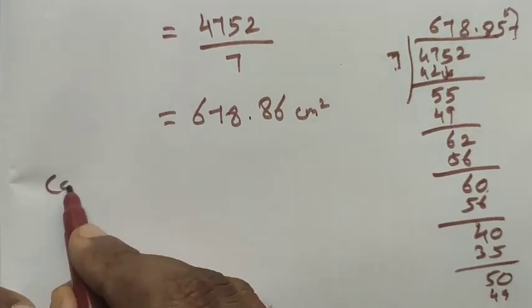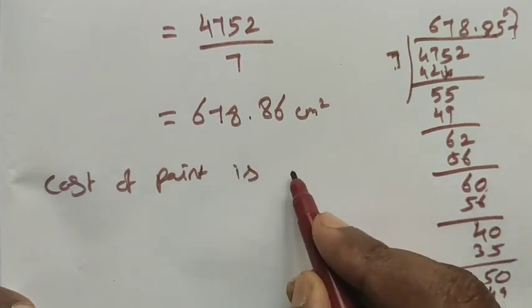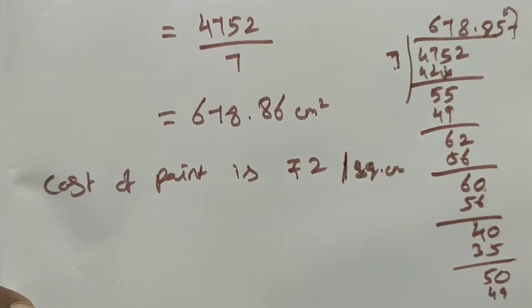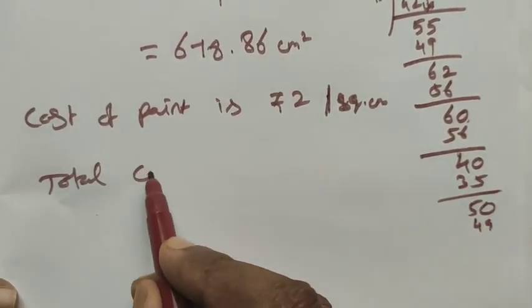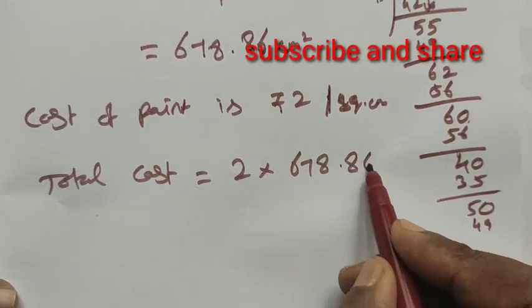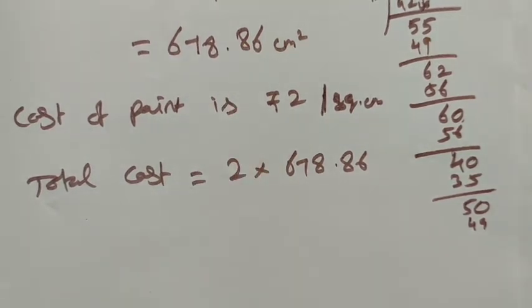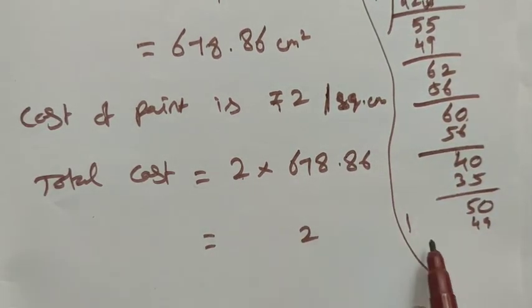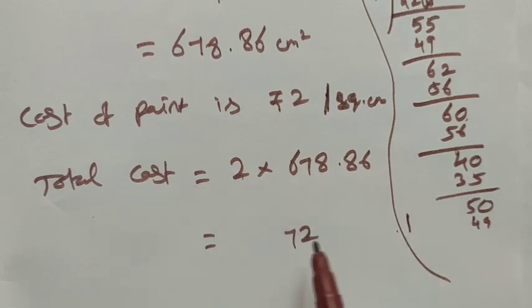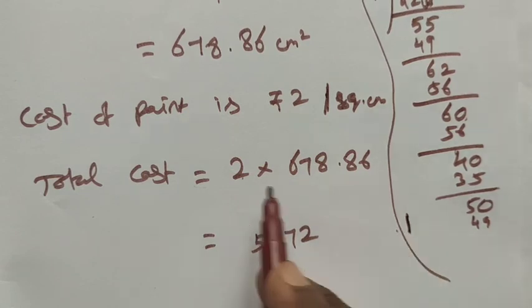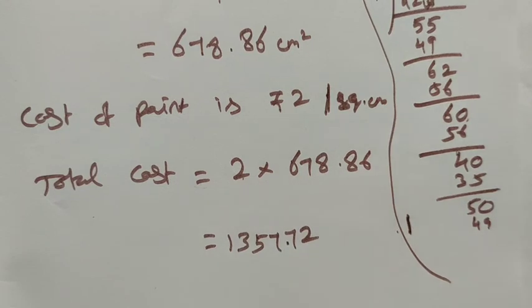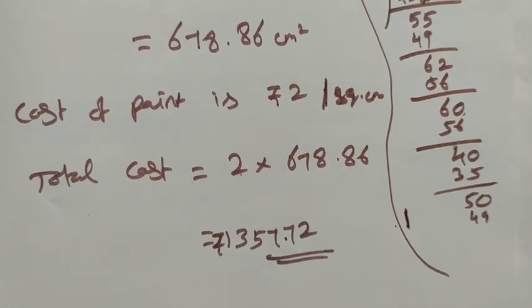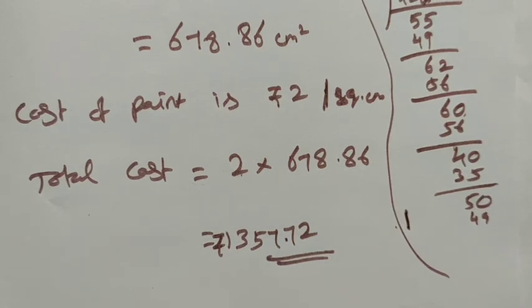The cost of painting is rupees 2 per square centimeter. So the total cost = 2 × 678.86 = 1357.72 rupees. The total cost of painting the lamp is rupees 1357.72. Thank you, students.